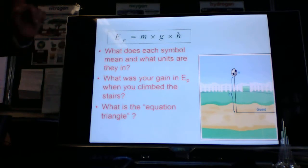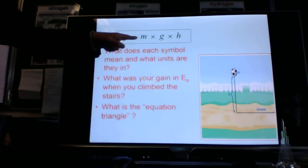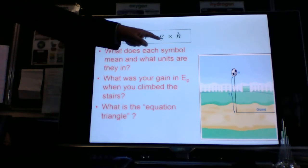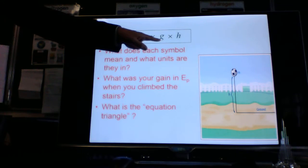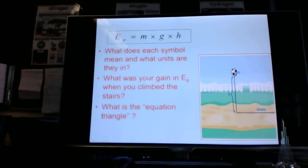So what does each symbol mean and what units are they in? m is the mass, units of mass are kilograms. g is the gravity, 10 newtons per kilogram. And h is the height that you have lifted an object back to the surface and it's in metres.